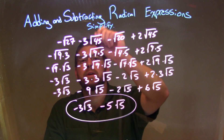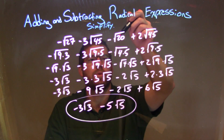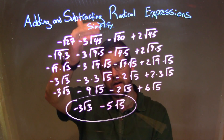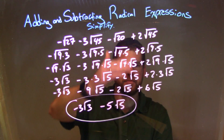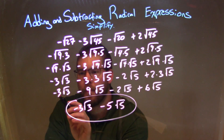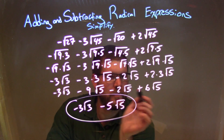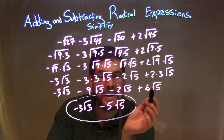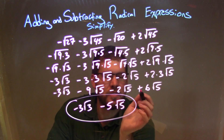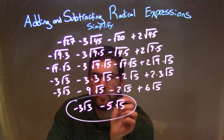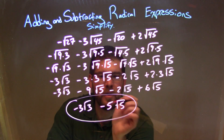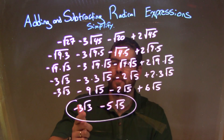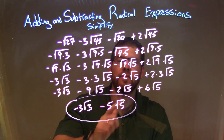Let's recap. We were given negative square root of 27 minus 3 square root of 45 minus square root of 20 plus 2 square root of 45. We simplified each square root as much as possible, giving us minus 3 square root of 3, minus 9 square root of 5, minus 2 square root of 5, plus 6 square root of 5. We combined all the square root of 5 terms: minus 9 minus 2 plus 6 equals minus 5, so minus 5 square root of 5. Final answer: minus 3 square root of 3 minus 5 square root of 5.